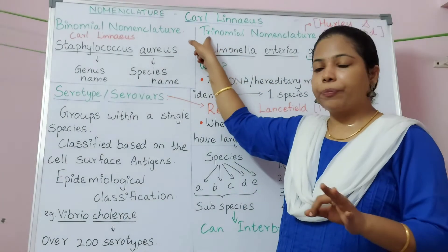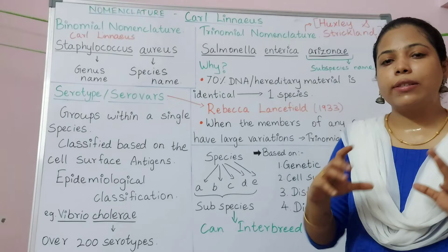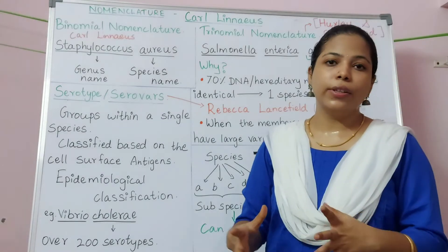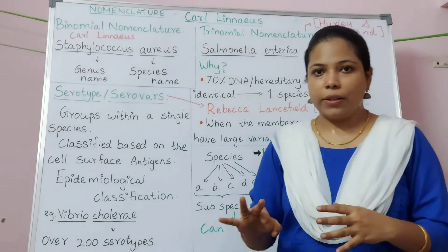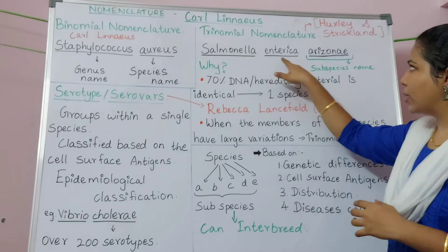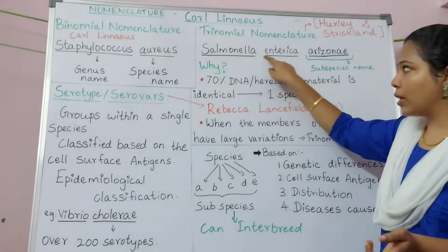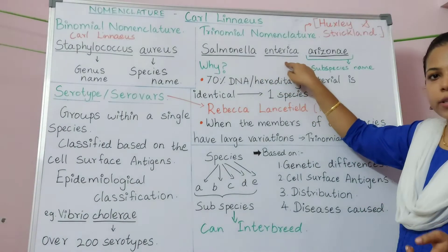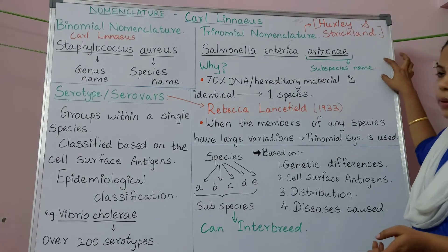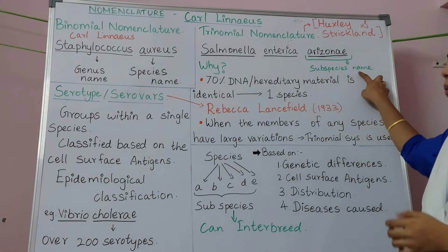'Tri' refers to three, so trinomial nomenclature is the system of naming organisms with three scientific terms. An example is Salmonella enterica arizonae. Salmonella is the genus name, enterica is the species name, and arizonae is the subspecies name.